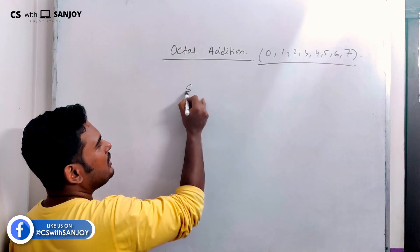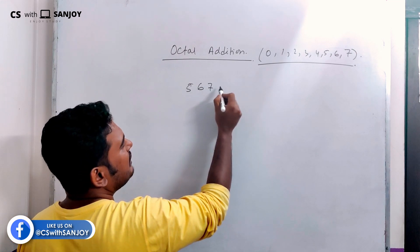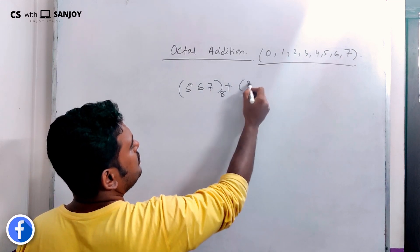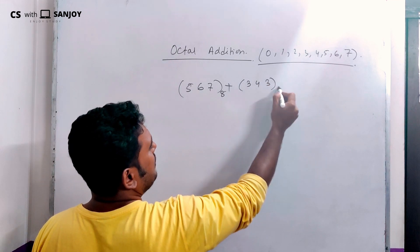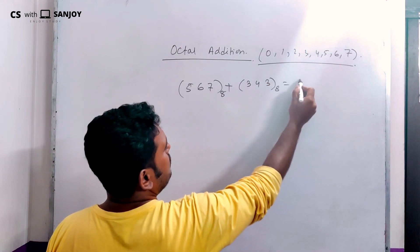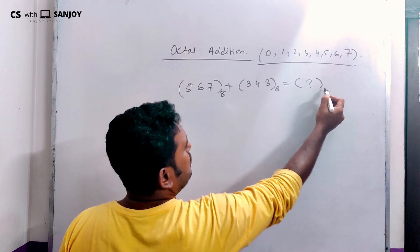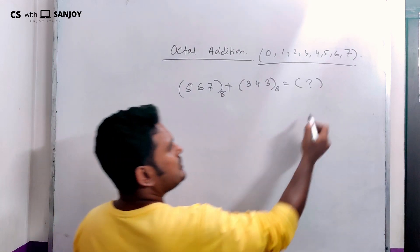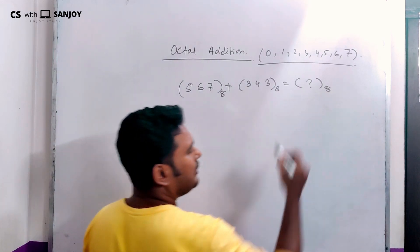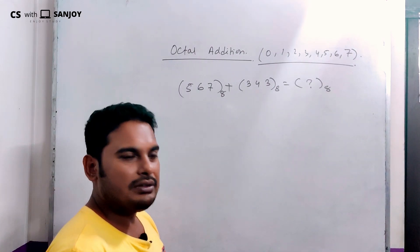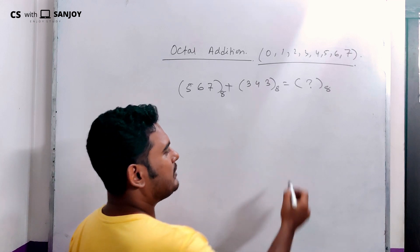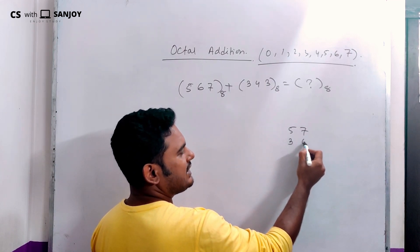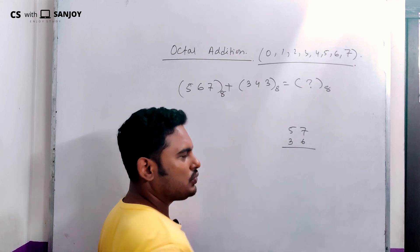Let's say we know that an octal number is 567, and we have to add octal number 343. These are our octal numbers. Now, when we have a decimal number — let's see, 057 and 36 — we have a decimal number system to compare with.